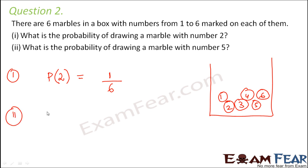What is the probability of drawing a marble with number five? So possibility to draw a marble of number five is one and total number of possibilities again is six. So the probability of getting a marble with number five is one by six.